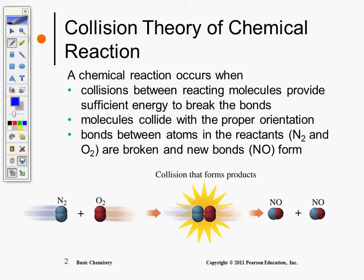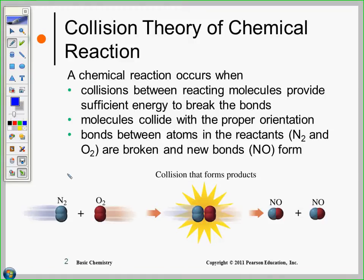They're colliding with the proper orientation — they're going to exchange electrons and go into sharing electrons. What type of bond do I have in N2? Diatomic. And what type of bond? Covalent. So these are both covalent bonds.